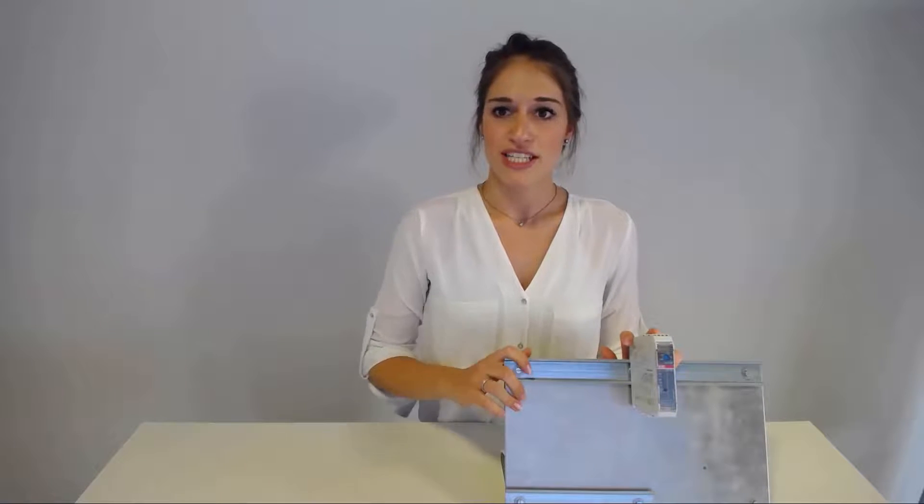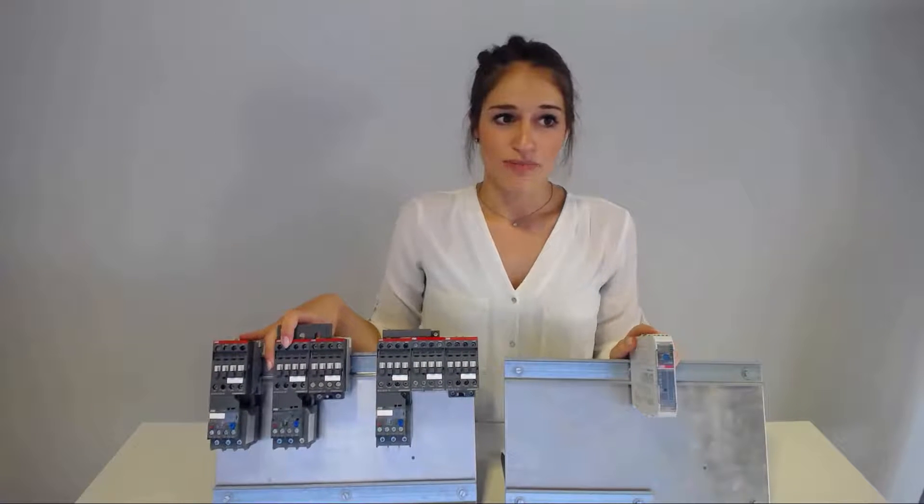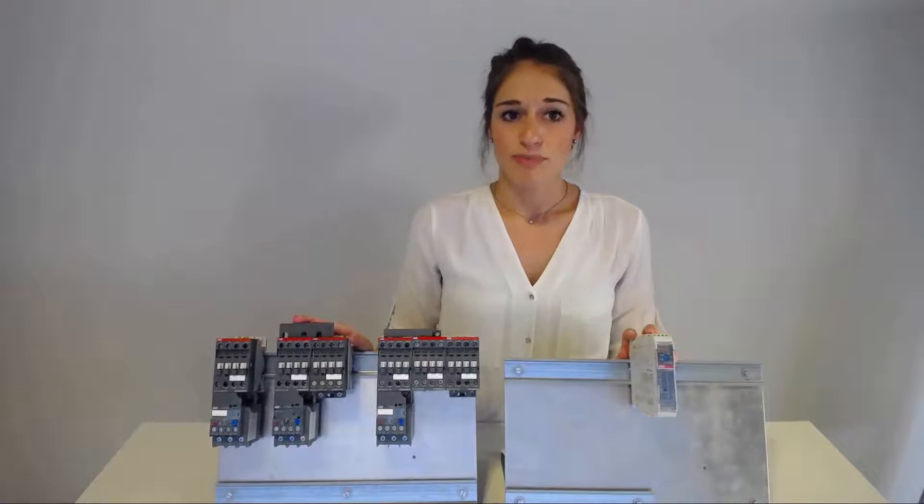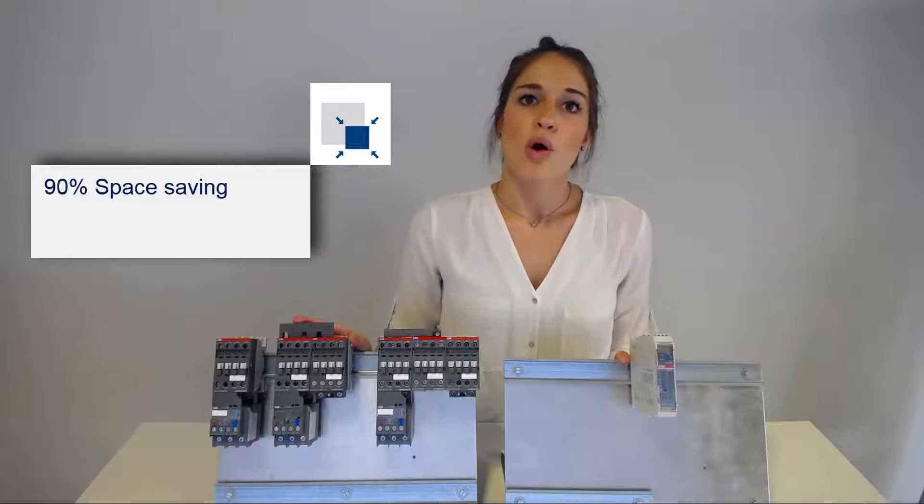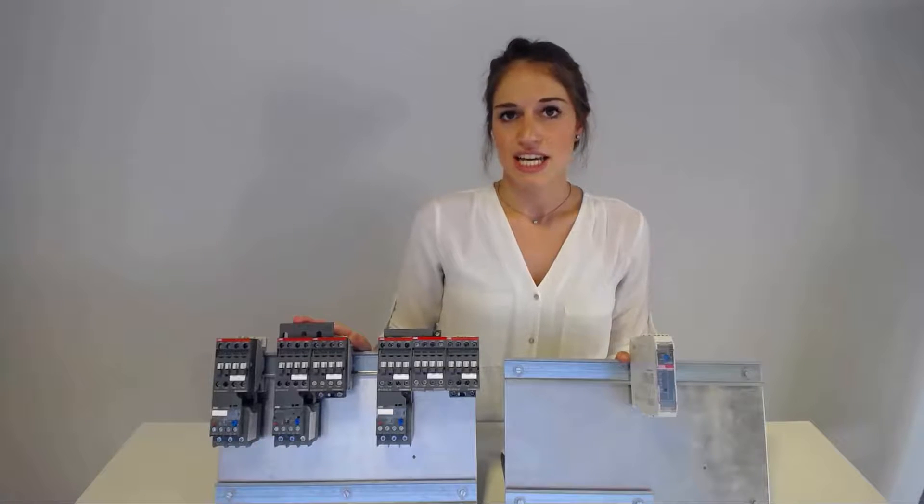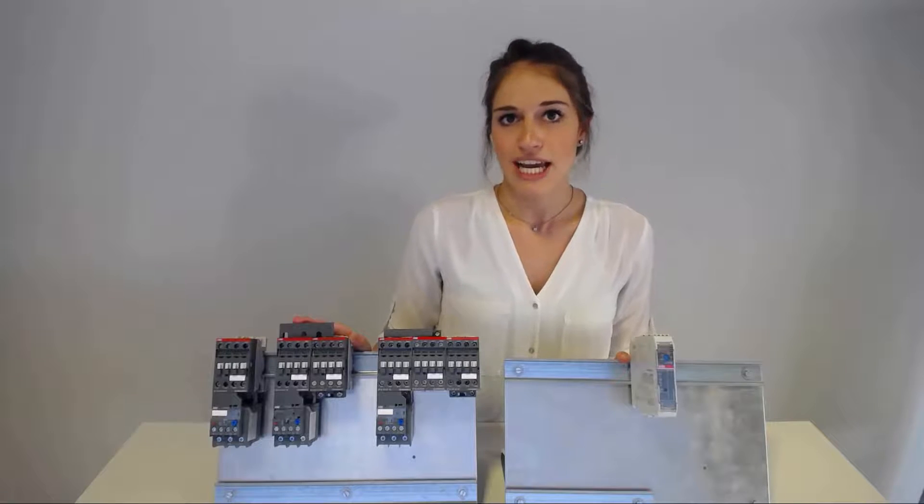Just have a look at how much space you can save by replacing your conventional starting solution with the HF range. Due to the space saving of up to 90 percent, you can either reduce the size of your control cabinet or implement other devices instead, leading to more reliability and safety.